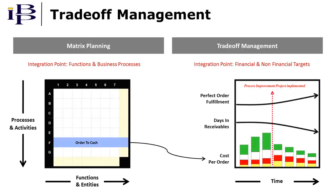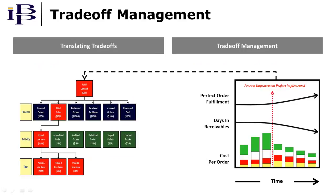Matrix planning provides the foundation for trade-off management, a capability that provides a key integration point for balancing financial and non-financial targets and measures. In this case, the cost of the order-to-cash process is used to derive cost-per-order targets. In turn, these higher-level trade-offs can be translated deeper into the organization.